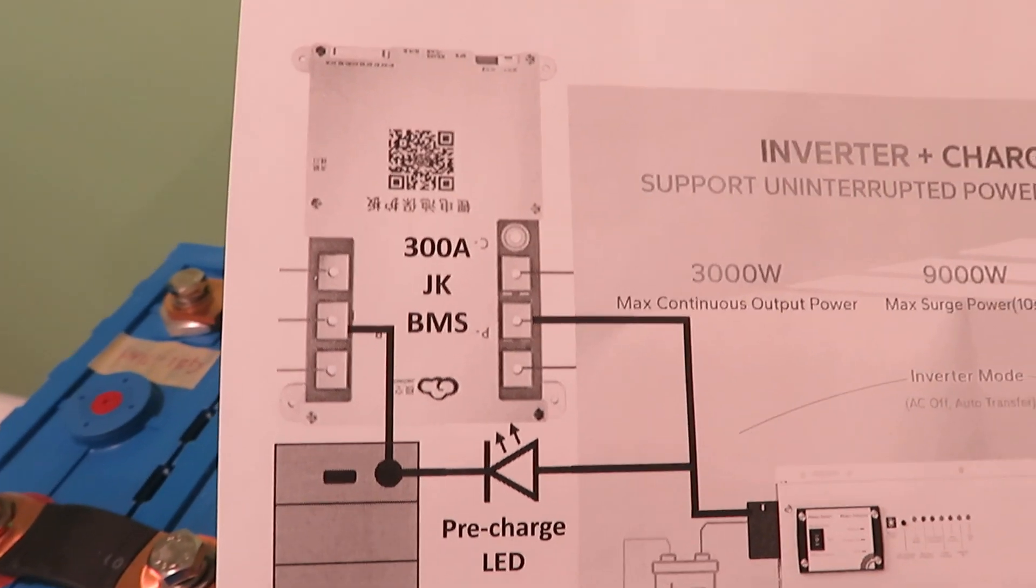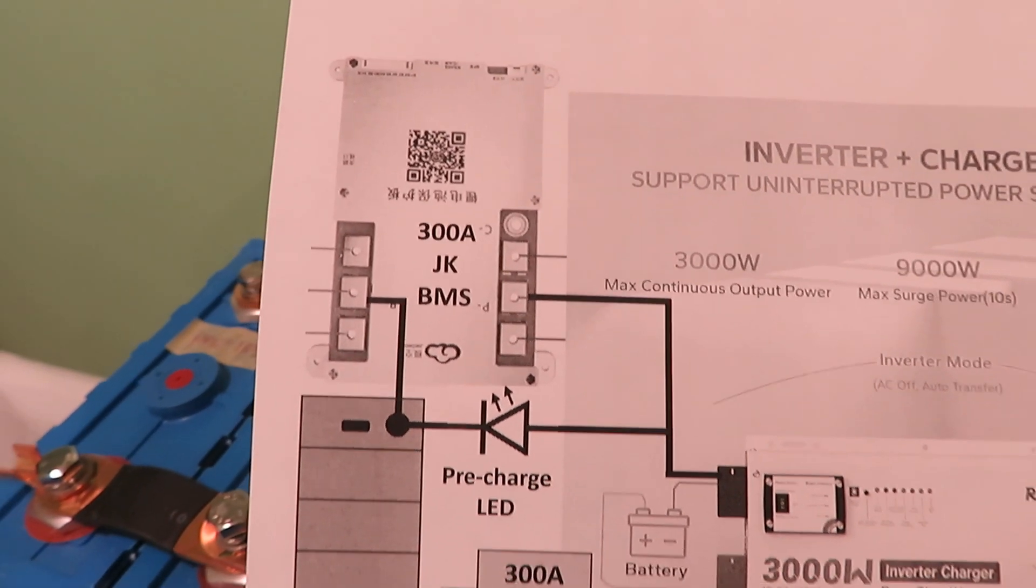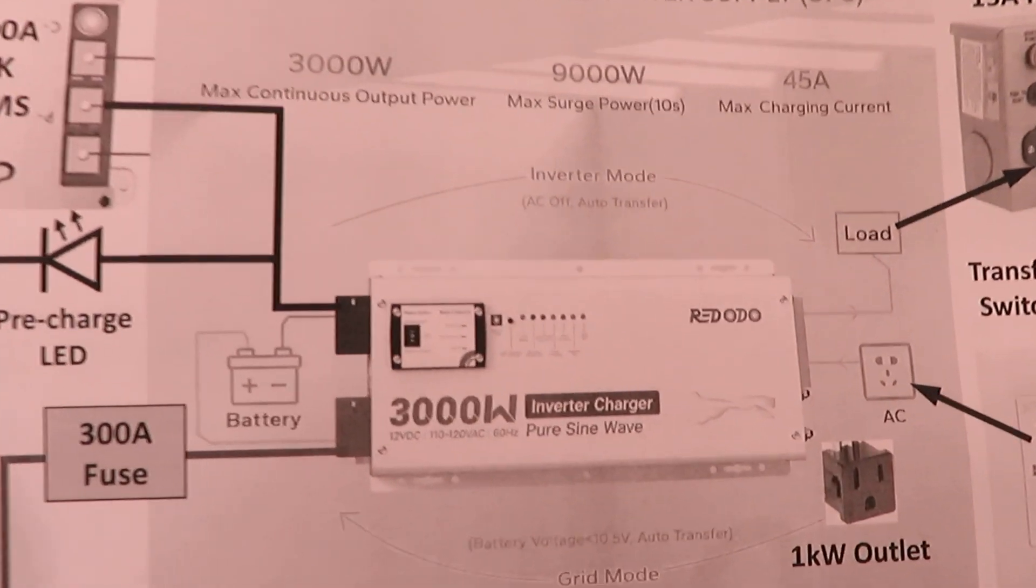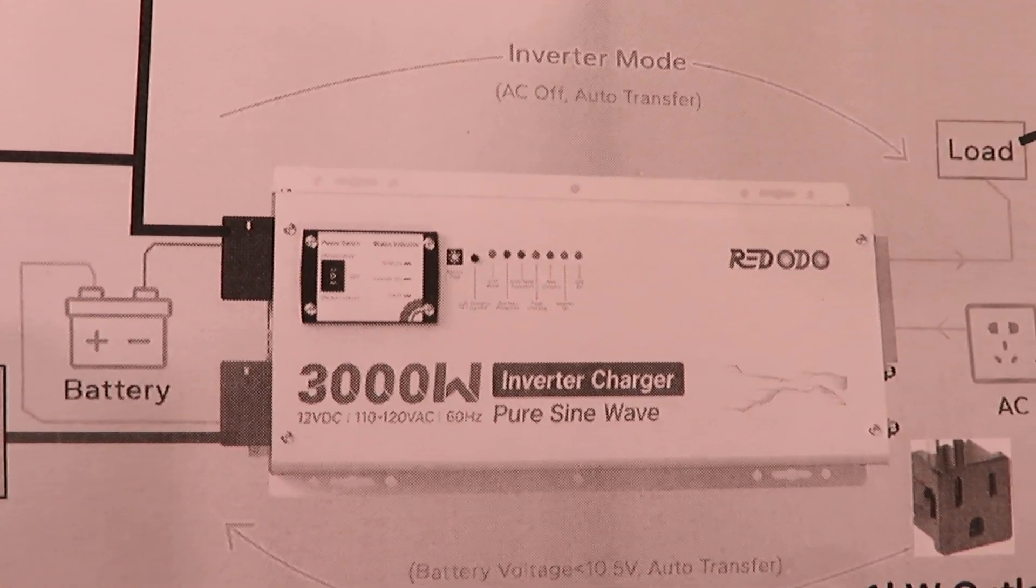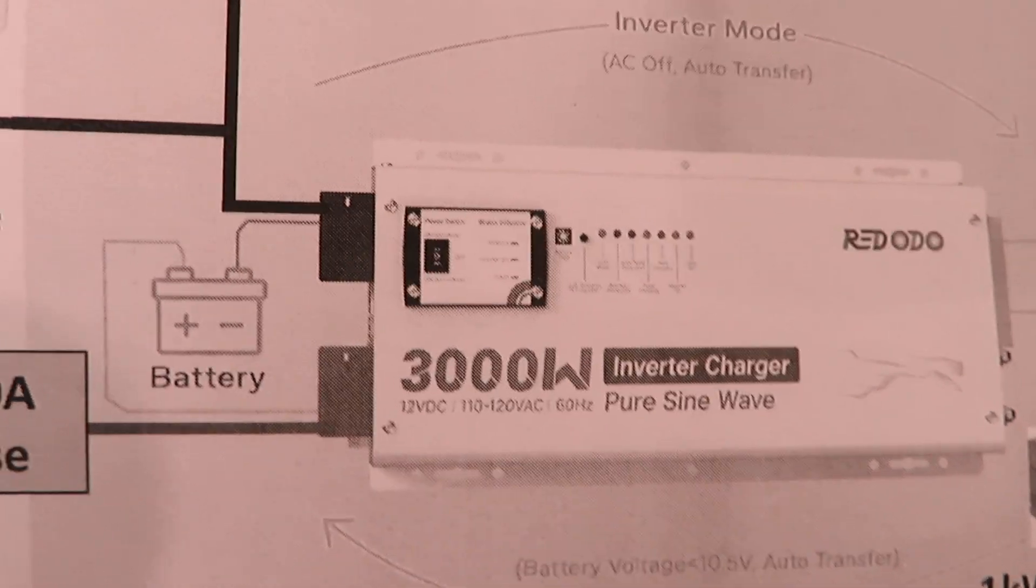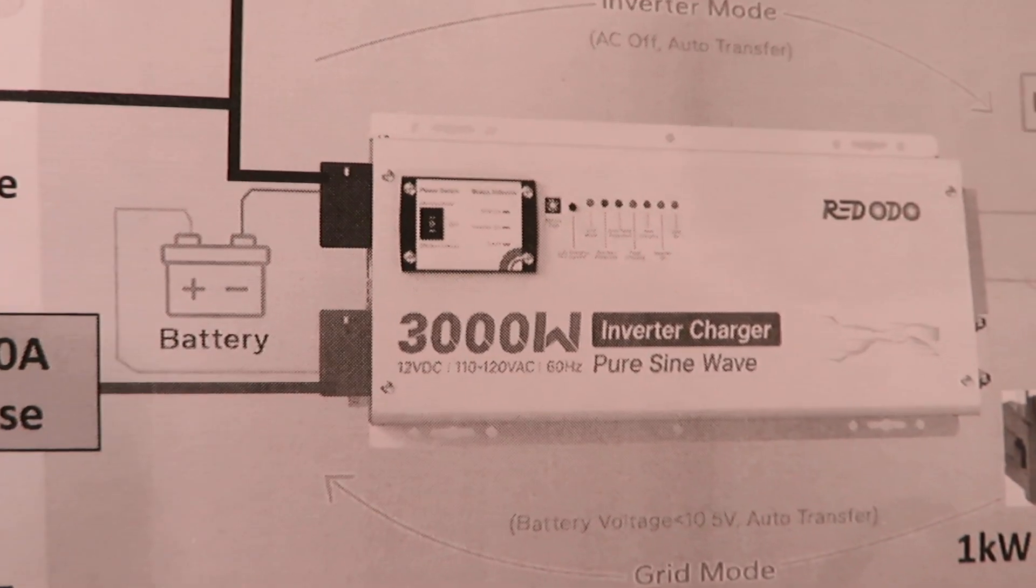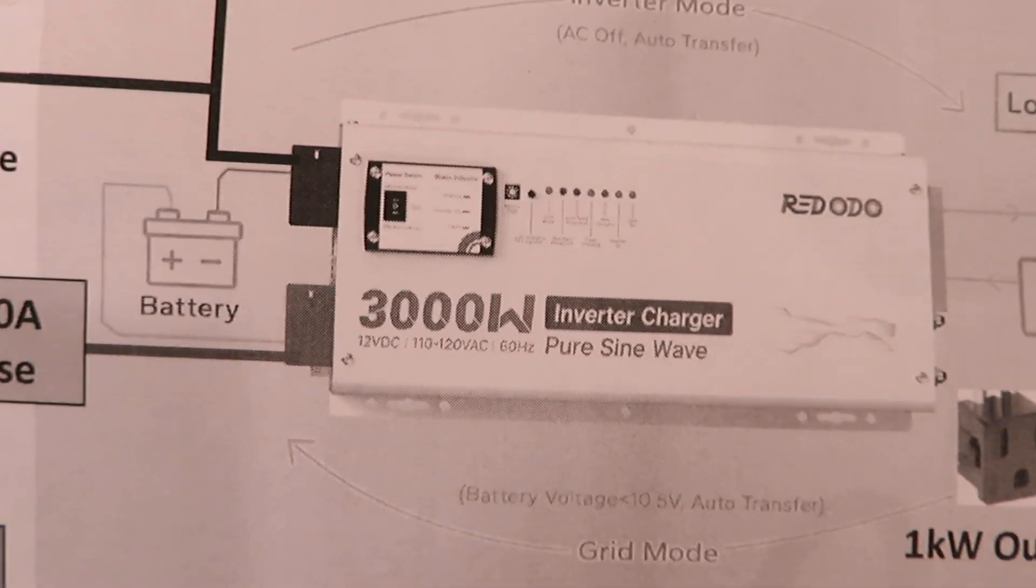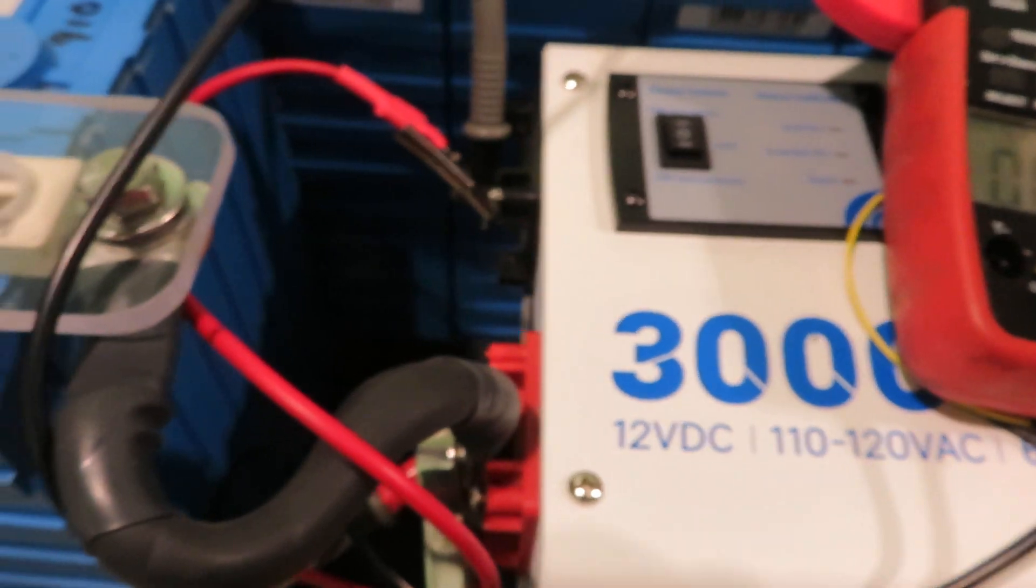So this is the inverter - it's a 3 kilowatt inverter, and the DC side has a huge capacitor in it acting like a short circuit. This is the physical inverter.